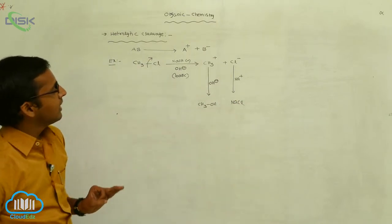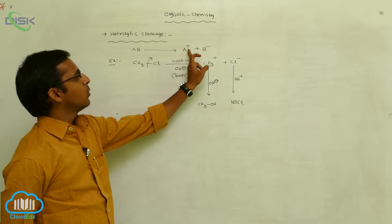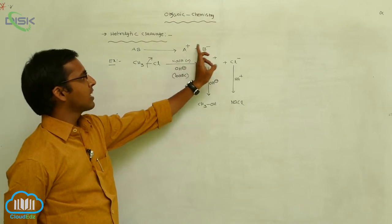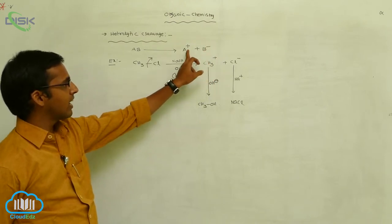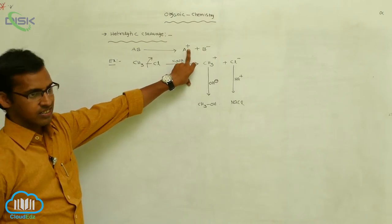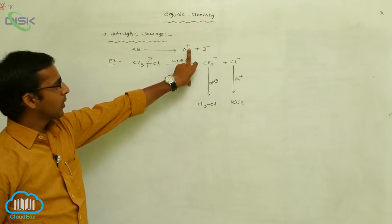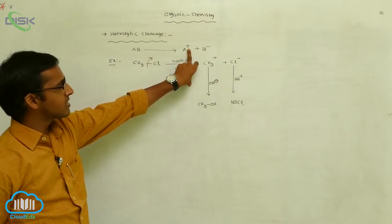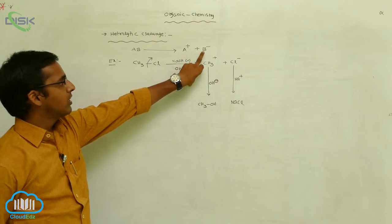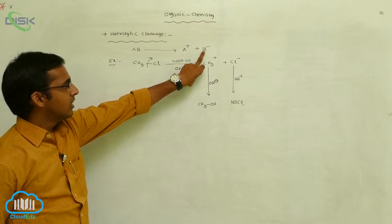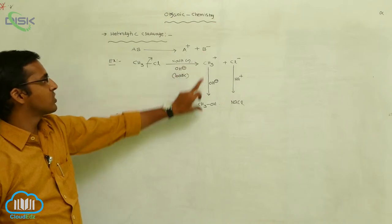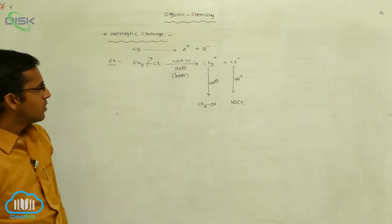So in heterolytic cleavages, two types of ions are formed: one is a cation and one is an anion. This cation carries only 6 electrons — that is our 6-electron configuration. This anion carries 8 electrons — that is our octet configuration.